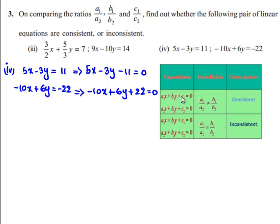Comparing the given equations with the standard equations a1x plus b1y plus c1 is equal to 0 and a2x plus b2y plus c2 is equal to 0,